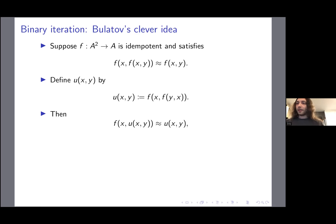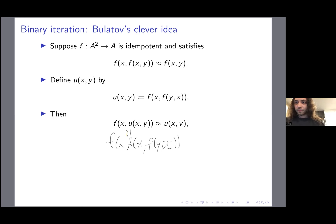The argument goes: by our assumption on F, and the fact that U(x,y) = F(x, something), we have F(x, U(x,y)) = U(x,y). Expanding: F(x, F(x, F(y,x))) = F(x, F(y,x)) by the identity on F, which is U again. So that proves this first little bit. Then plugging in U(U(x,y), x) and expanding the outer U gives F(U(x,y), F(x, U(x,y))). Replacing F(x, U(x,y)) with U(x,y) and using idempotence of F, we get back U(x,y).